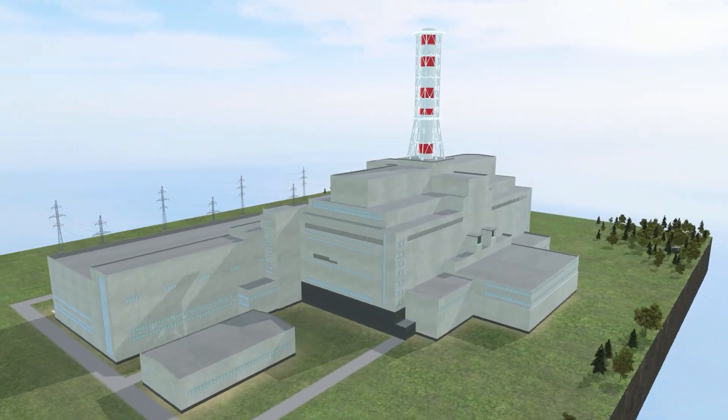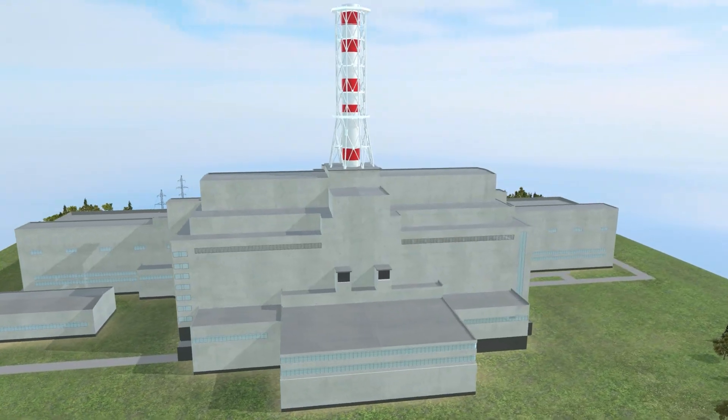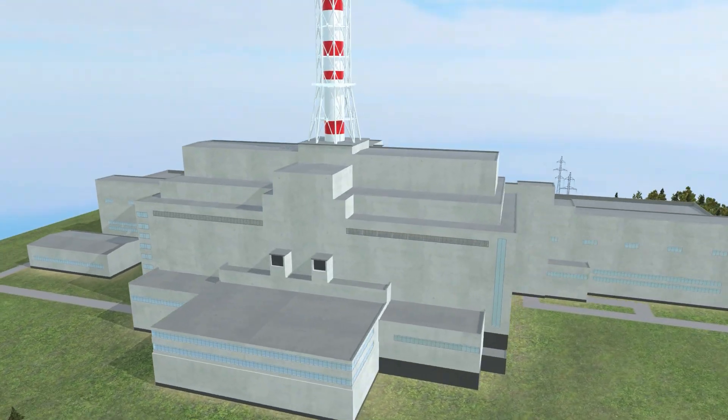RBMK, Reactor Bolshoi Moshnosti Kanalnyi, plants are single-circuit nuclear power plants built exclusively on the territory of the former USSR.